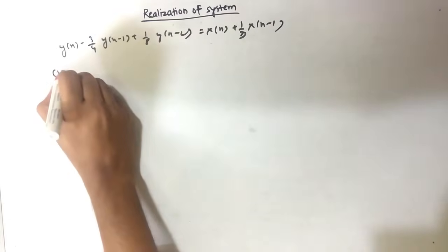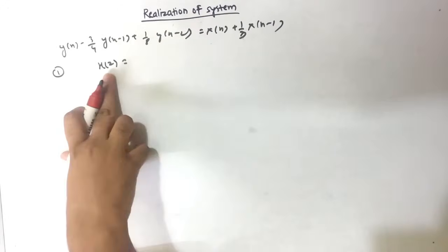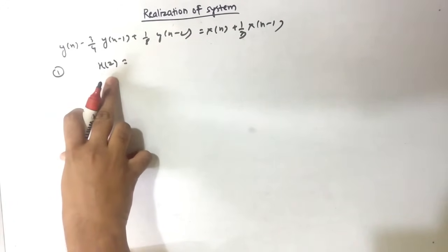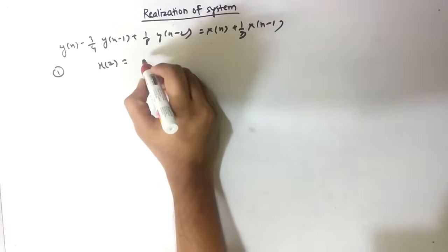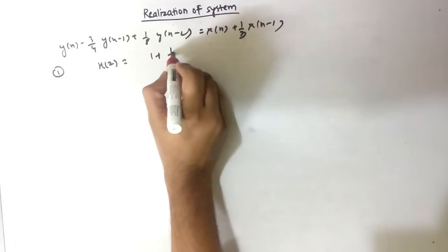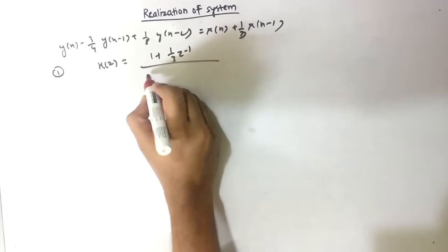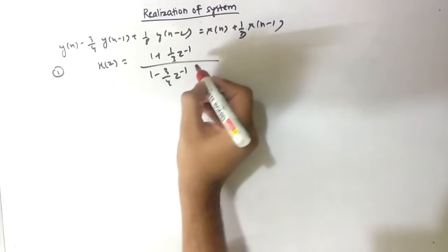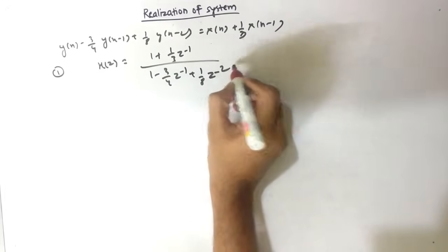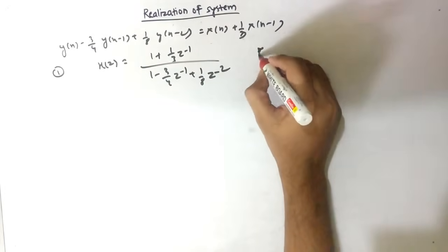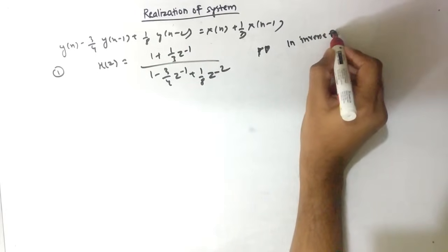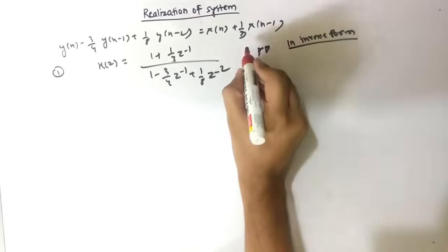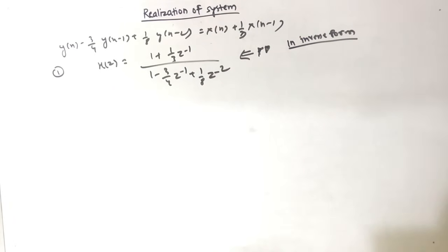The first step is always to find H of Z. H(Z) is the transfer function — if you don't know how to find it, I have covered it in my previous video; links are in the description. H(Z) equals [1 + (1/3)Z⁻¹] divided by [1 - (3/4)Z⁻¹ + (1/8)Z⁻²]. Importantly, you must write H(Z) in inverse Z form.